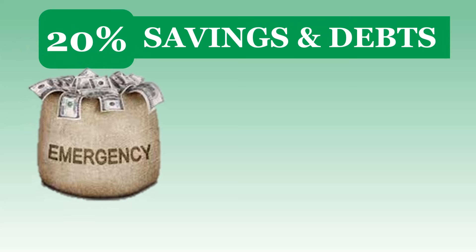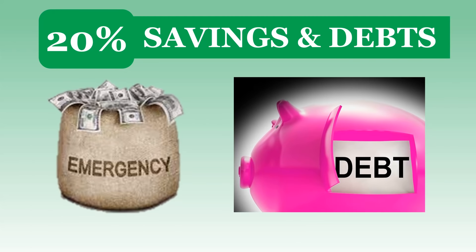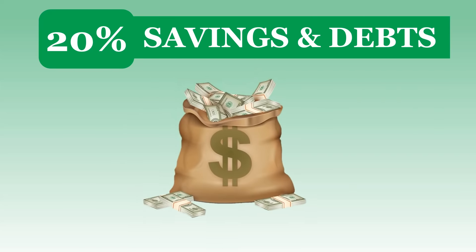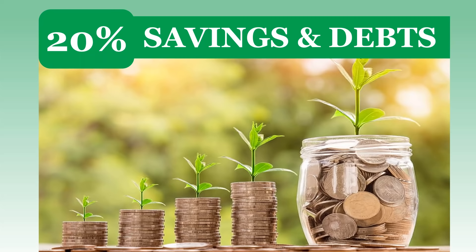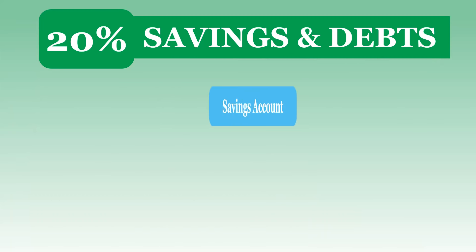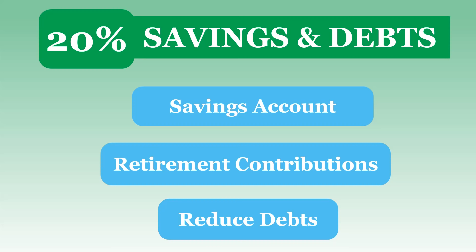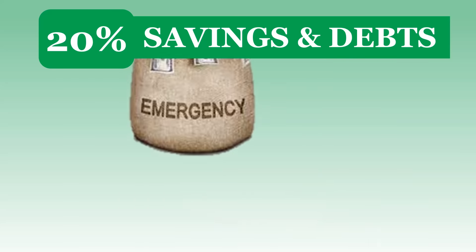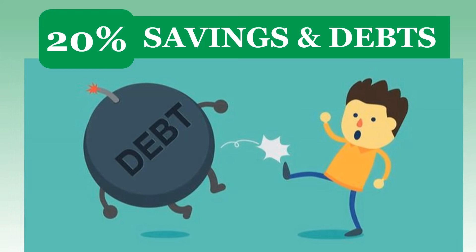20% savings and debts. This category is the amount you stock away to prepare for the future and in case of emergency, and to pay off debts. This part of your income should be used to pay down existing debt and create a comfortable financial cushion to help avoid taking on future debt. You should try to allocate 20% of your net income to savings and investments. This includes adding money to a savings account, making retirement contributions, and reducing your debts. It must include starting and growing an emergency fund, saving for retirement, and paying off debt, beginning with the high-interest ones.